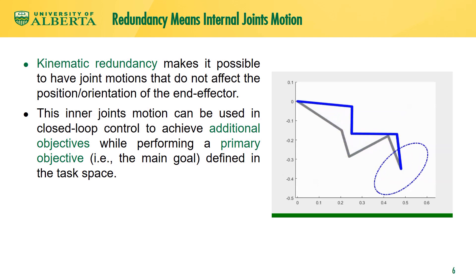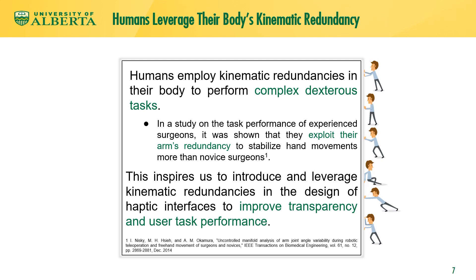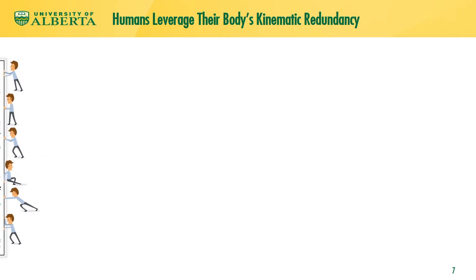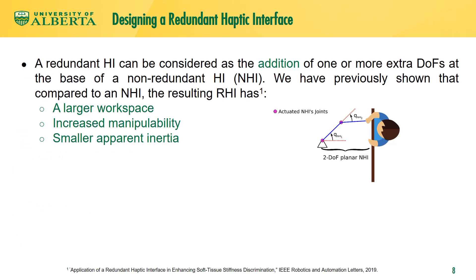For instance, the video on the right shows the manipulability enhancement of a 4 degree of freedom manipulator using internal motion control. Humans employ kinematic redundancies in their body to perform complex, dexterous tasks. In a study on the task performance of experienced surgeons, it was shown that they exploit their arm's redundancy to stabilize hand movements more than novice surgeons. This inspires us to introduce and leverage kinematic redundancies in the design of haptic interfaces to improve transparency and user task performance.